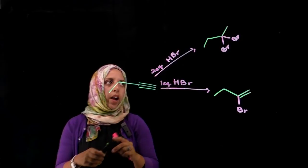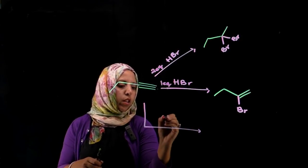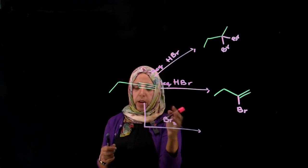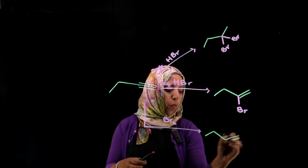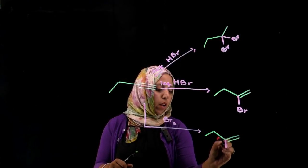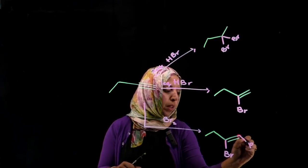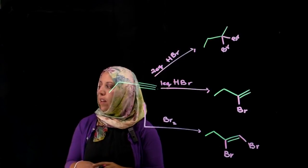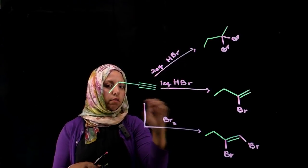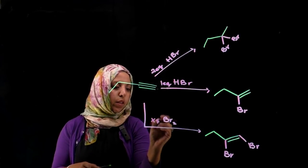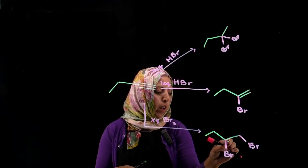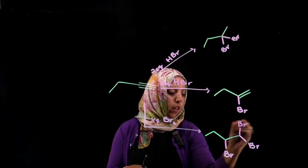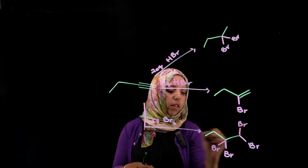Now what about a halogenation reaction? In halogenation, again, we could be using one equivalent or two equivalents. If it doesn't say one equivalent, we do assume that it is one equivalent. So one of the pi bonds is used up, and then we have two bromines across one of the two pi bonds. If we add an excess amount of bromine, then we get rid of that pi bond, and the reaction happens once again, giving us another bromine and another bromine.